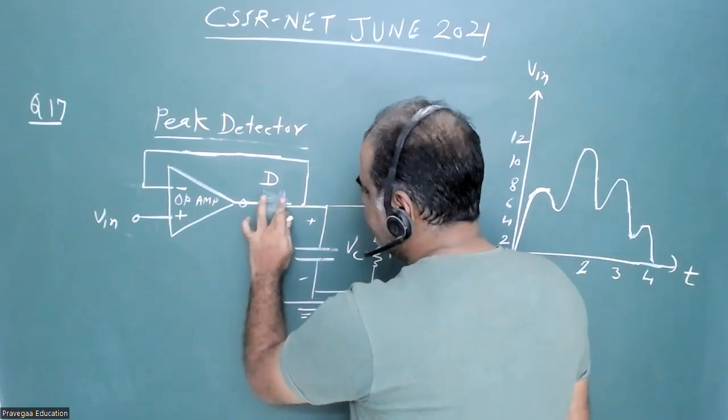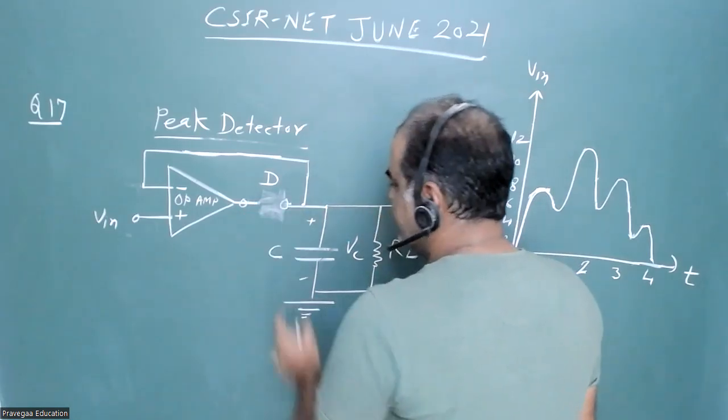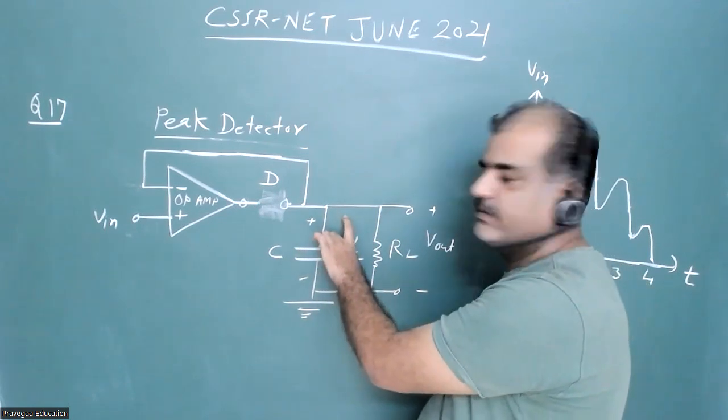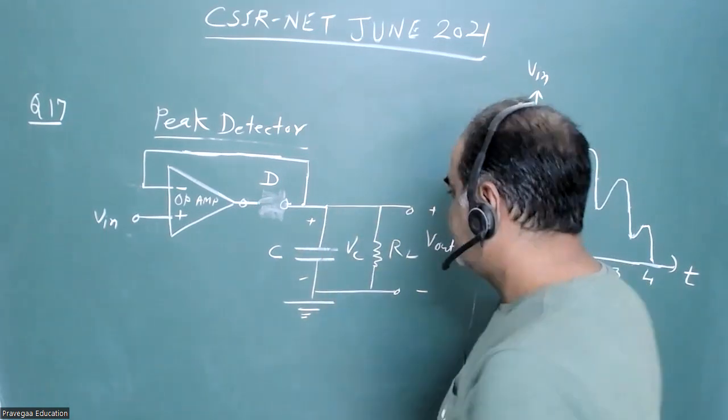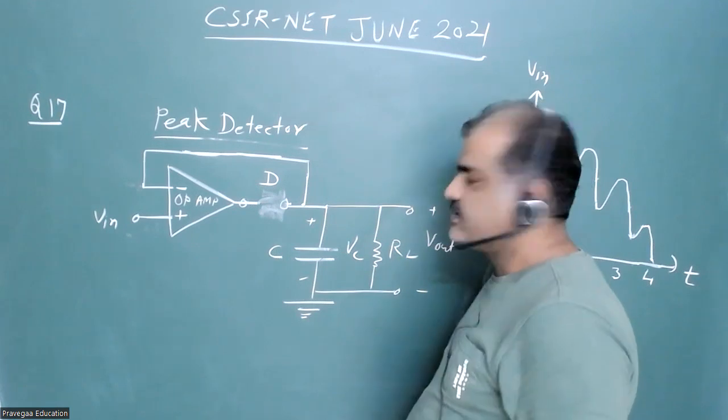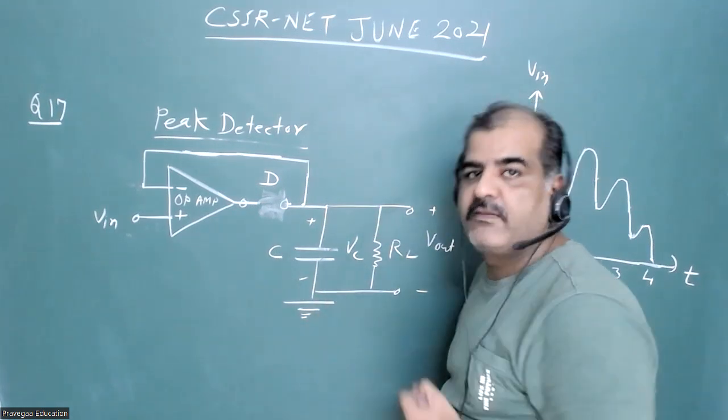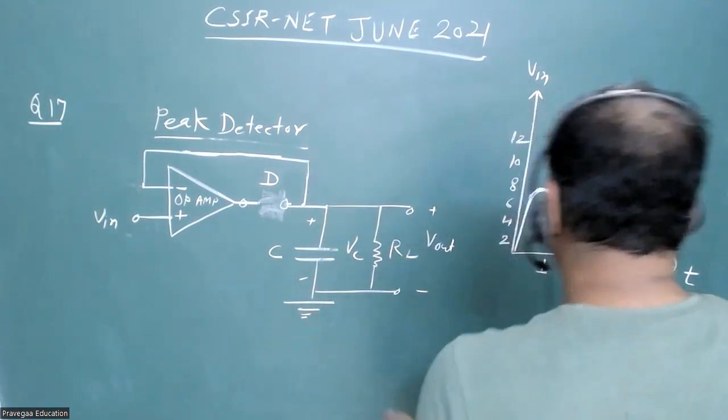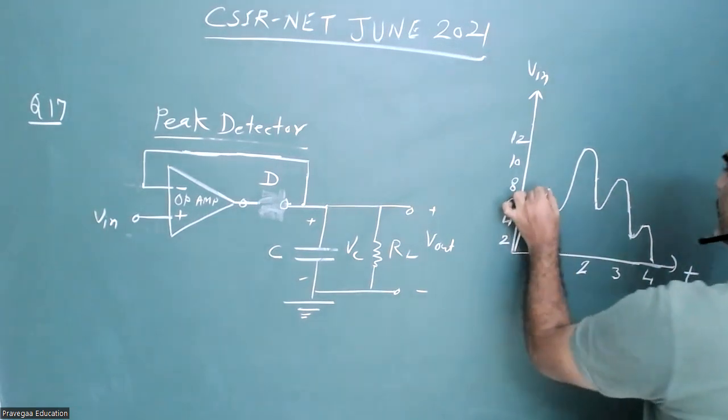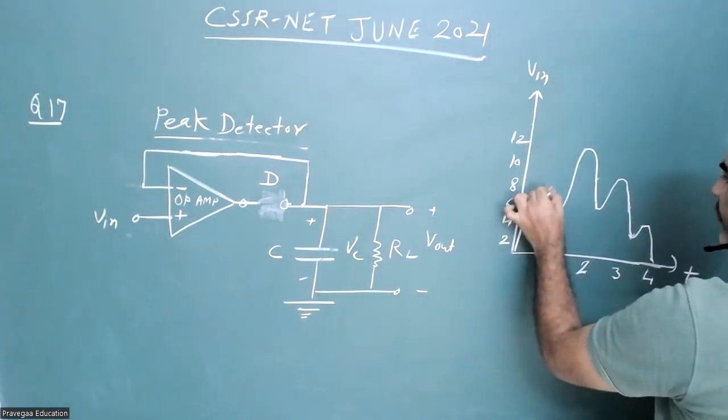This circuit will get open. Now whatever voltage, that voltage will be stored here because it is given in the question that RC, the time constant of the circuit, is very high compared to the measurement time. So when this input decreases compared to this peak value, our output will maintain constant.